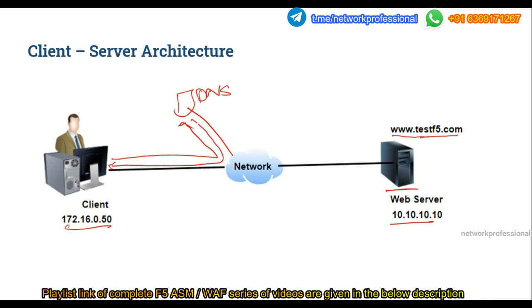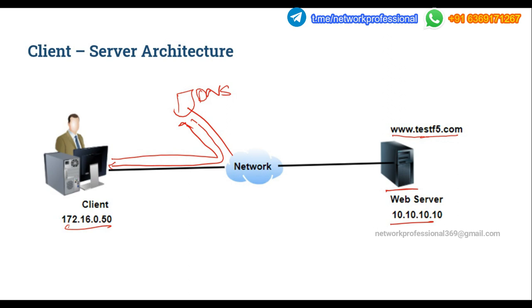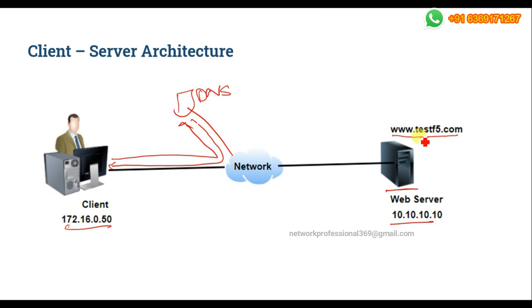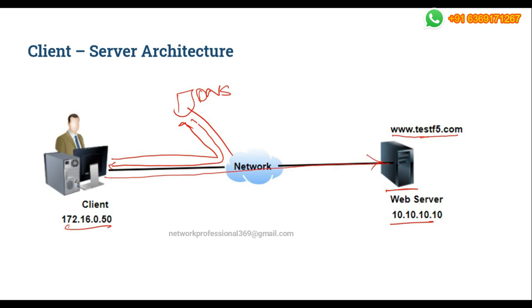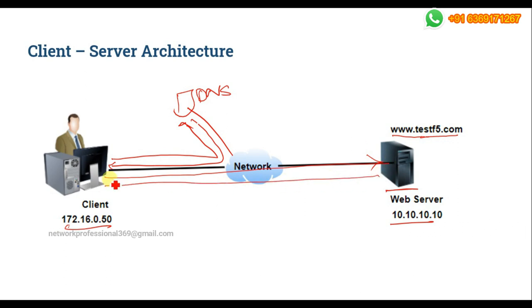With the DNS response, the client gets to know the original public IP address of the application server. We are talking about internet communication — the client and server are on two different networks, which is why DNS comes into picture. Once the client gets the IP address of the actual destination server, it will try to reach that destination. The server receives the request and responds to the client. This is how client-server architecture works.